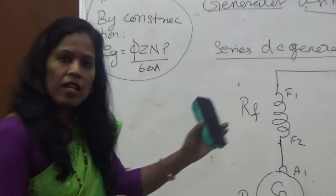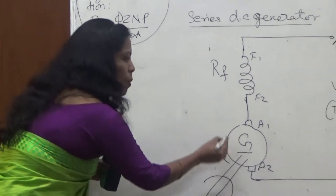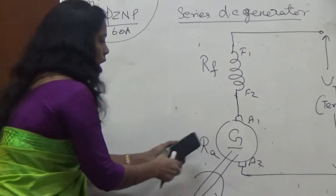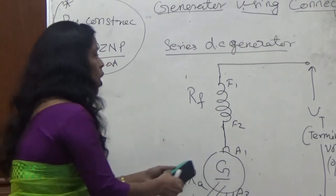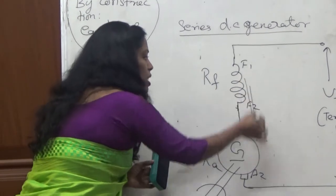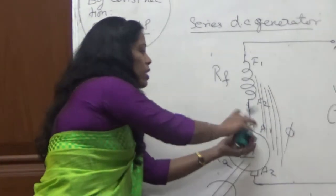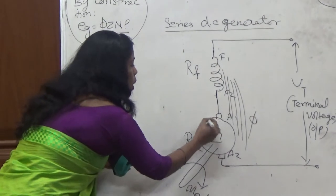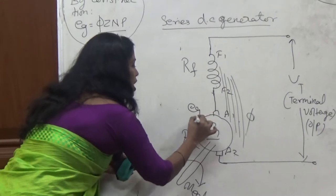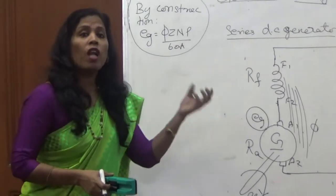Now it is a generator. Generator wants mechanical energy, so we are going to rotate this armature. Here is the mechanical input. Now I am rotating the generator, armature is rotating. This field winding already produced the flux magnetic field. Now this armature is rotating in the magnetic field. It cuts the magnetic field. Now in this armature, the EMF is generated.